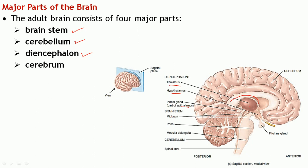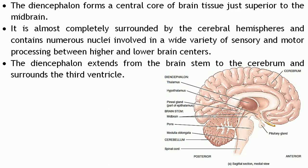The diencephalon forms the central core of the brain, located just superior to the midbrain, and is almost completely encircled by the cerebral hemispheres. This part of the brain comprises a number of nuclei. A nucleus within the CNS is a group of cell bodies present in the central nervous system — that is referred to as a nucleus.